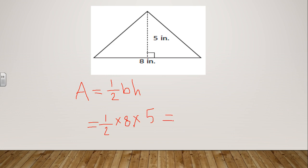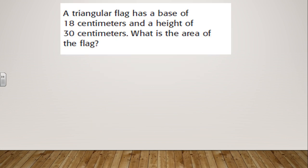Area equals half times base times height, so that equals half times eight times five, because the base is eight and the height is five. Half times eight times five equals 20 inches squared.